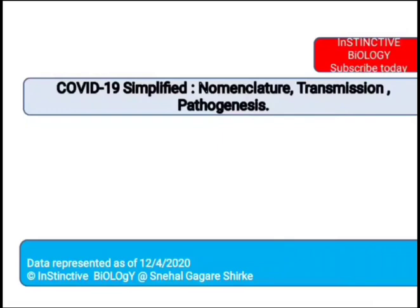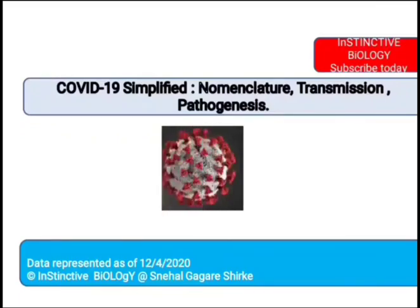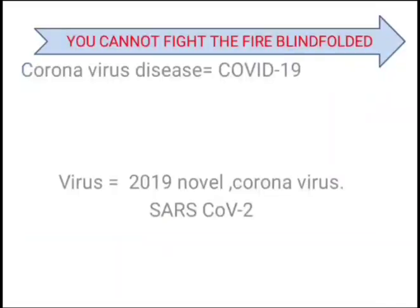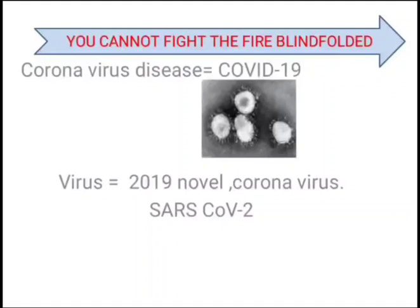This video will discuss about the nomenclature — that is, why the virus was named so — what is COVID-19, how it is transferred from one person to another, that is the transmission, and what exactly happens when the virus enters the human body, that is pathogenesis. As we know, any fire cannot be fought blindfolded; we should know every detail about the virus and the disease.